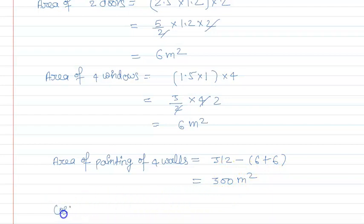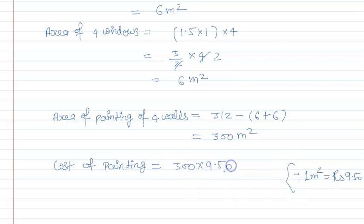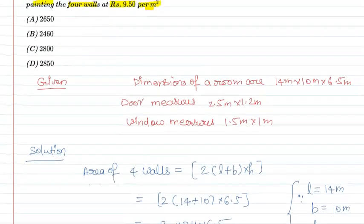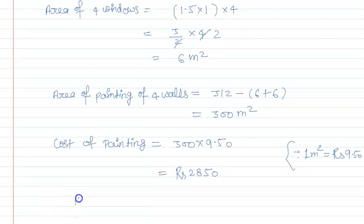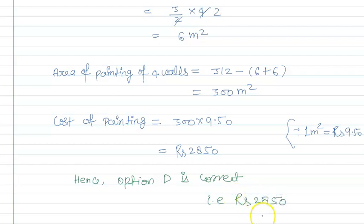Cost of painting निकालते हैं। Question में given है कि 1 meter square की cost है ₹9.50। तो 300 meter square के लिए: 300 × 9.50 = ₹2850। Hence, correct answer option D है, that is ₹2850। I hope you understood the question. Thank you.